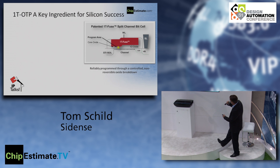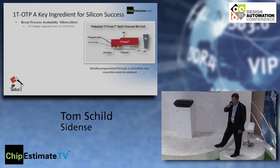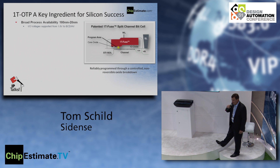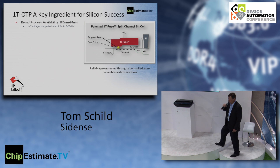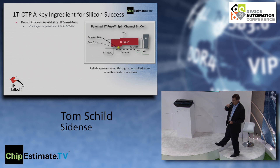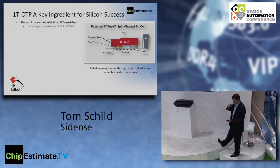The beautiful thing about this architecture is it's very easy to scale across process nodes, from 180 nanometers all the way through FinFET. It scales nicely, is easy to port, and is compatible with these processes in standard CMOS — meaning we don't add any additional masking steps or process tweaks. It's done with standard bulk CMOS and doesn't use things like MIM caps or deep n-well, so it is purely a base CMOS process.